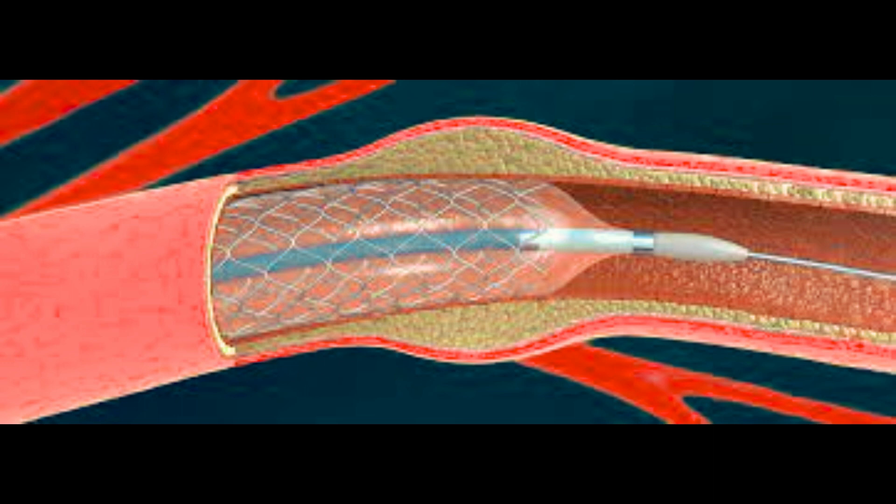3. Revascularization. In cases of gangrene caused by reduced blood supply (ischemic gangrene), revascularization procedures such as angioplasty, stenting, or bypass surgery may be performed to restore blood flow to the affected area and promote tissue healing.